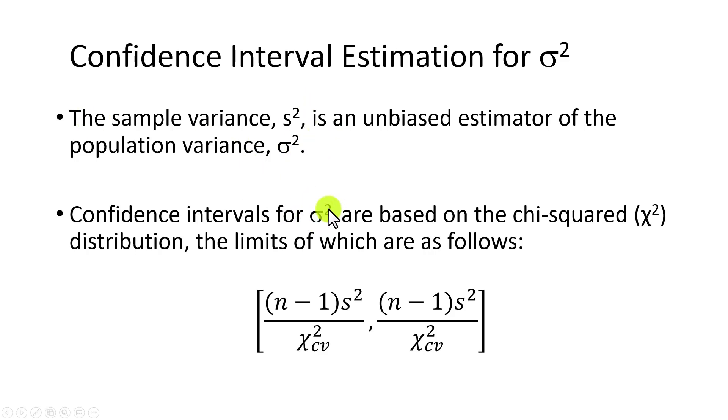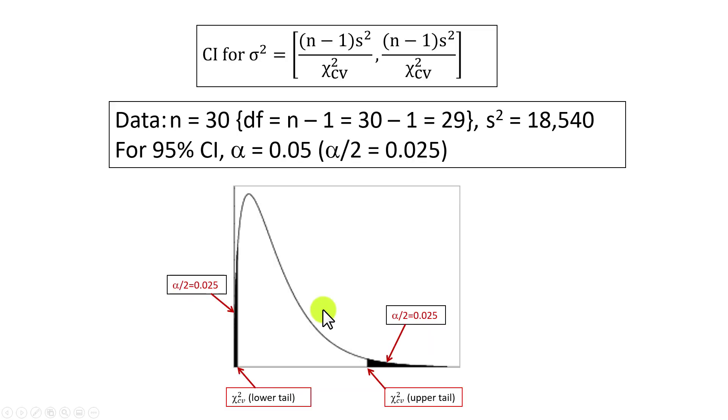Confidence intervals for population variance are based on the chi-square distribution. The limits are shown right here: the lower limit and the upper limit. The denominator represents the critical values associated with each of these two limits. The numerator is the product of degrees of freedom and the sample variance. Degrees of freedom is sample size less 1.